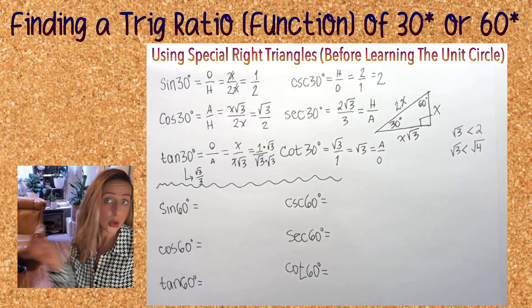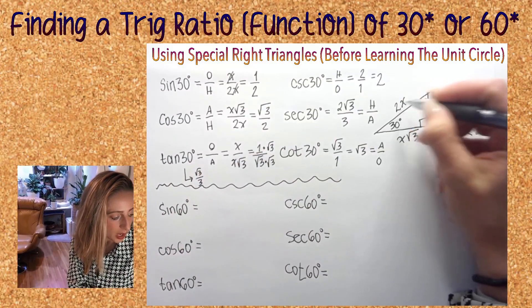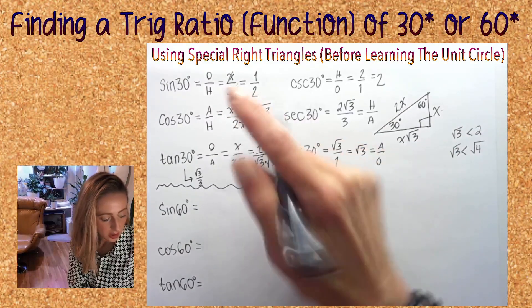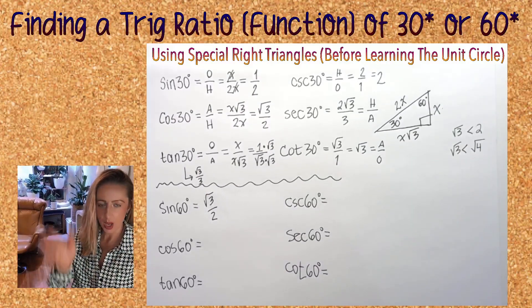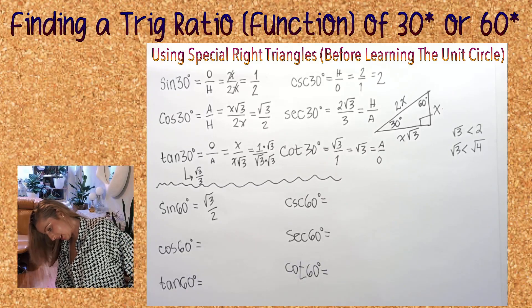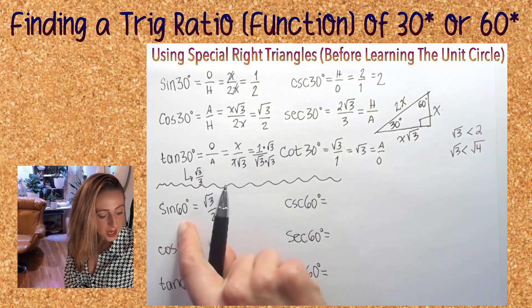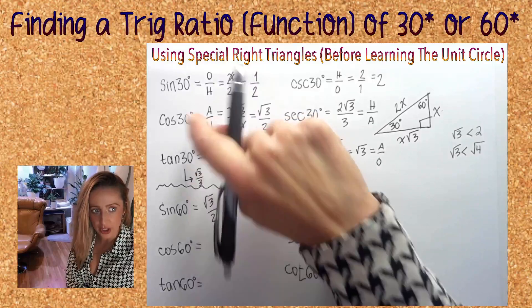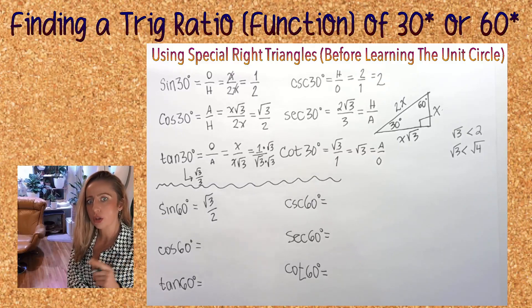Now here, sine of 60. Here's 60, opposite over hypotenuse. It's x root 3 over 2x, that's going to be root 3 over 2. Sine of 60 equals the cosine of 30. If you remember, the trig of an angle is equal to the co-trig of its complement.